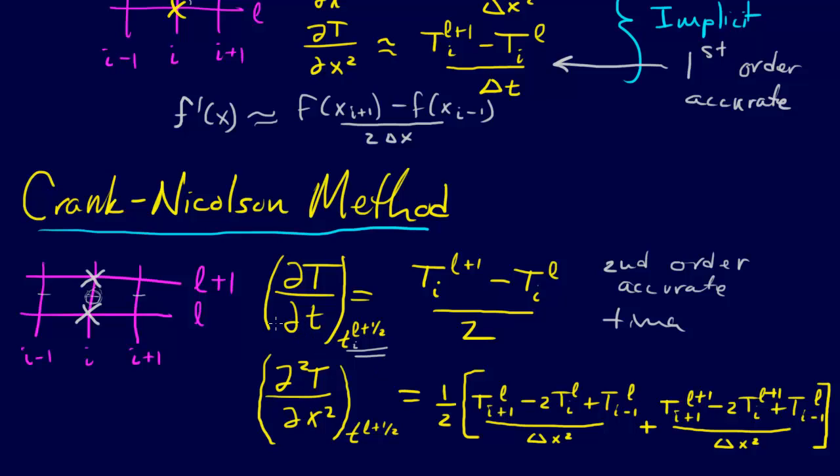Now the problem though is that we have to expand around these other points. When we do that, it looks a little bit more complicated. We have to say it's 1/2 times [t_i+1^l - 2t_i^l]. So we're just doing it at each point, and then we're averaging it. This is all times 1/2.